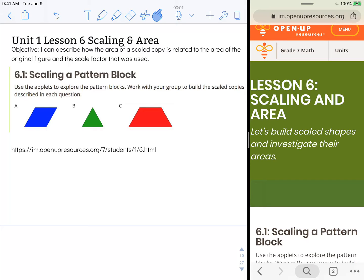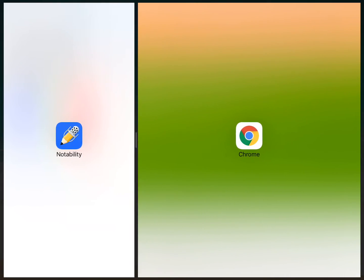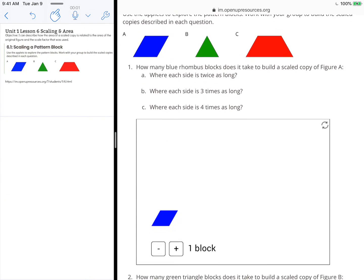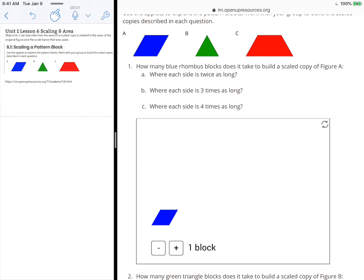We're going to look at the warm-ups, scaling a pattern block. Use the applets to explore the pattern blocks. Work with your group to build the scaled copies described in each question. We're going to pop over to the website and look at the applets that are available. We're going to look first at this rhombus here.